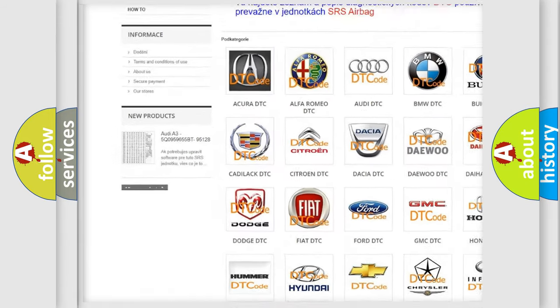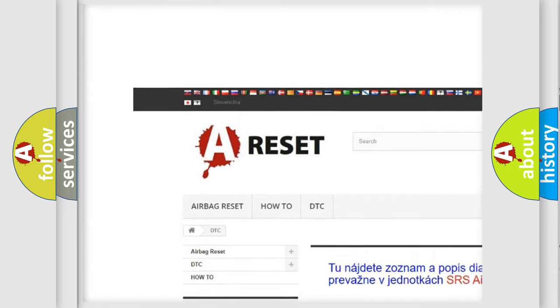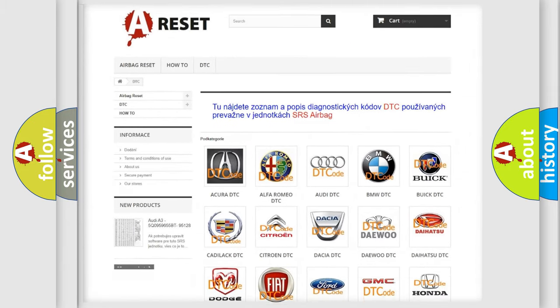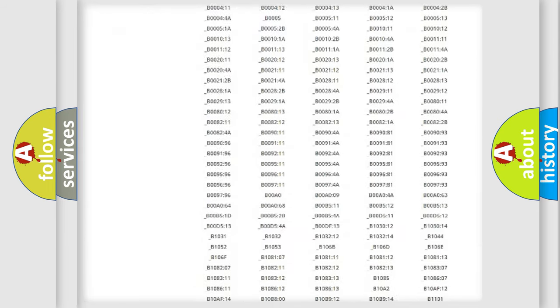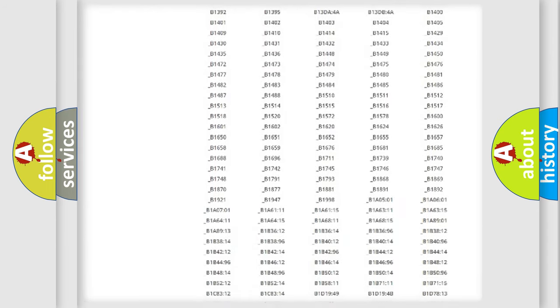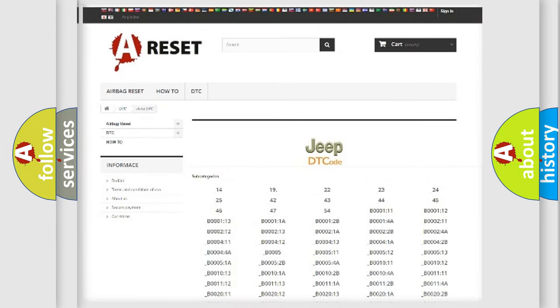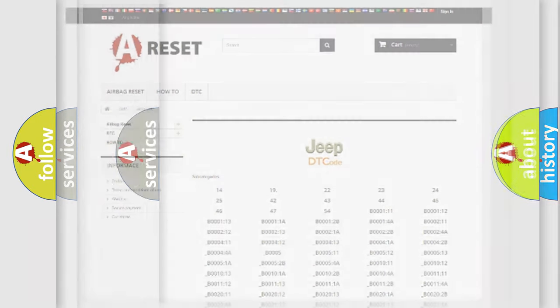Our website airbagreset.sk produces useful videos for you. You do not have to go through the OBD2 protocol anymore to know how to troubleshoot any car breakdown. You will find all the diagnostic codes that can be diagnosed in Jeep vehicles, and also many other useful things.